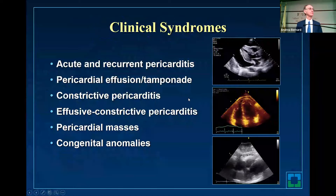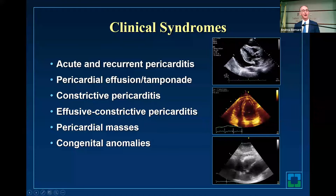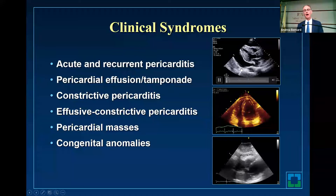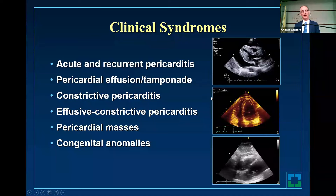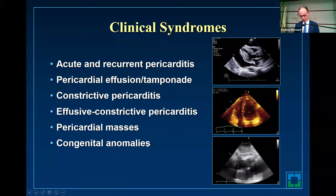What are the syndromes? In the pericardial space, you have acute and recurrent pericarditis, effusion-tamponade, constriction, effusive constriction, massive effusion — this is a case of lymphoma — and congenital anomalies. This is the shopping list of possible clinical syndromes.